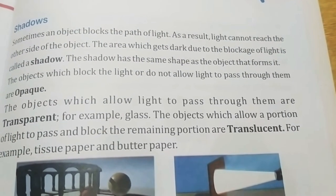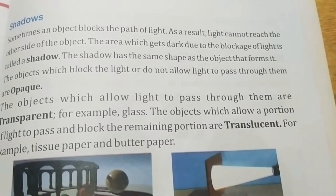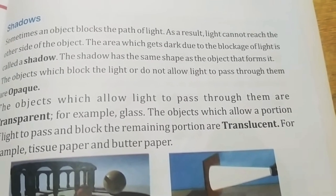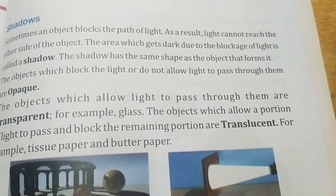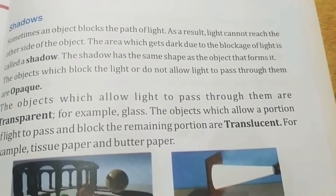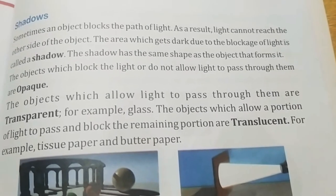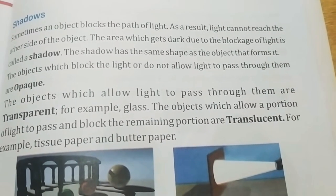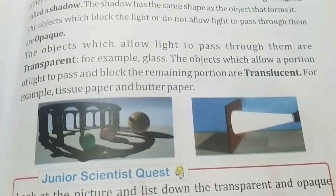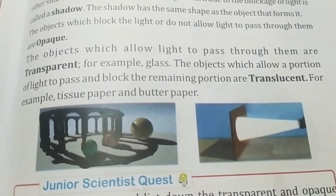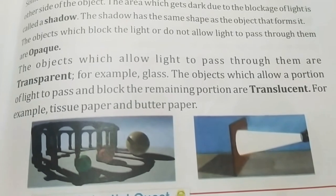What is a shadow? Sometimes an opaque object blocks the path of light. As a result, light cannot reach the other side. The area of darkness is called a shadow, which is formed due to the blockage of light. The object that blocks light is called opaque because light cannot pass through it.